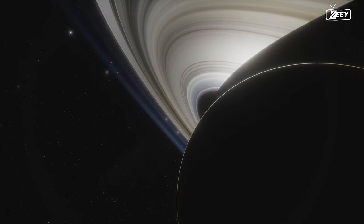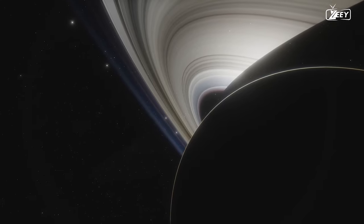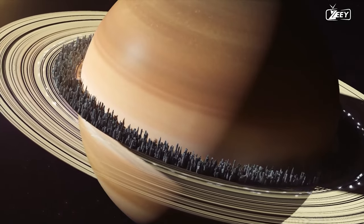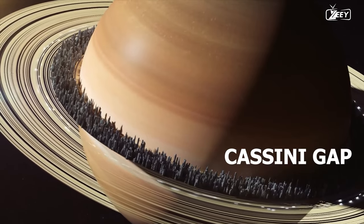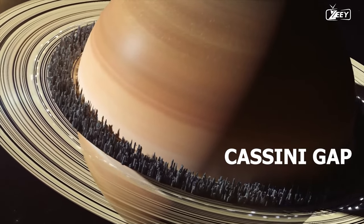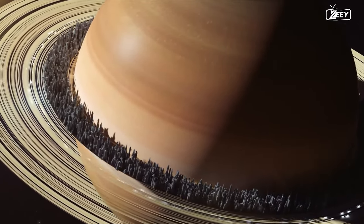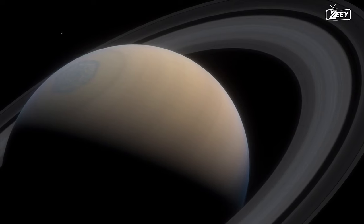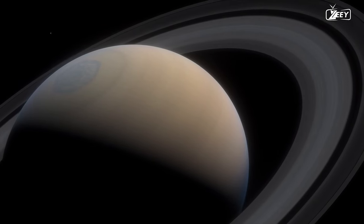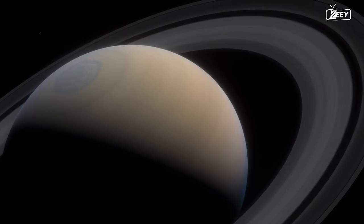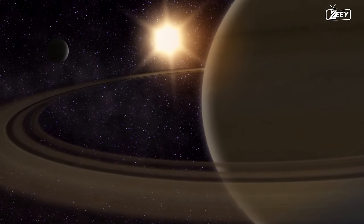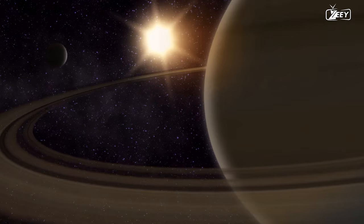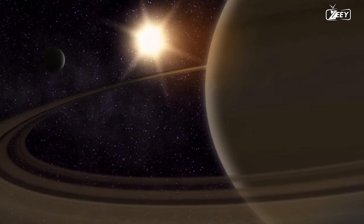For instance, why do various portions of a ring have different thicknesses and densities? Why do some rings have such distinguishing characteristics such as the Cassini gap? The Cassini gap is one of Saturn's asteroid rings most distinctive features. This gap is a relatively vacant region of the ring that is thought to have been created by Saturn's largest moon Titan's gravitational pull.